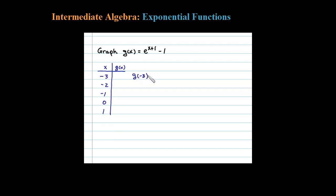We find Y values by evaluating. So g(-3) in this case would be e^(-3+1) - 1, which is e^(-2) - 1. That's negative 3 plus 1 minus 1, which is like 1/e² - 1.